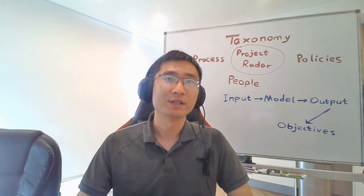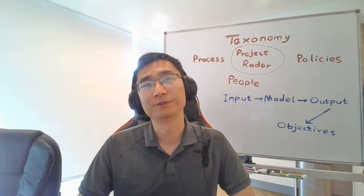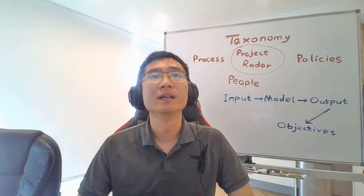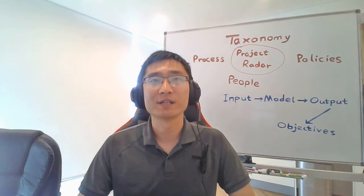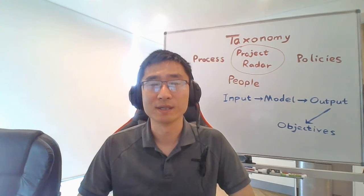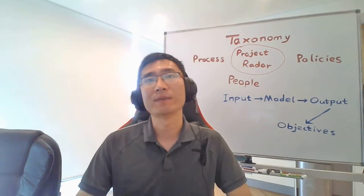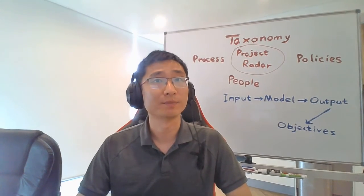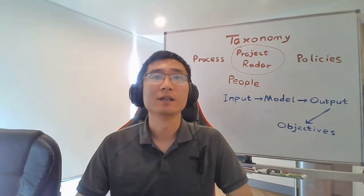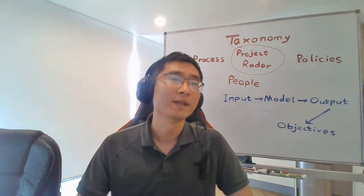The next question you asked me is about the key considerations during the implementation of Project Radar. There are five considerations based on the project components. Number one, the taxonomy development should follow a bottom-up and top-down approach for consistency and users' buy-in.